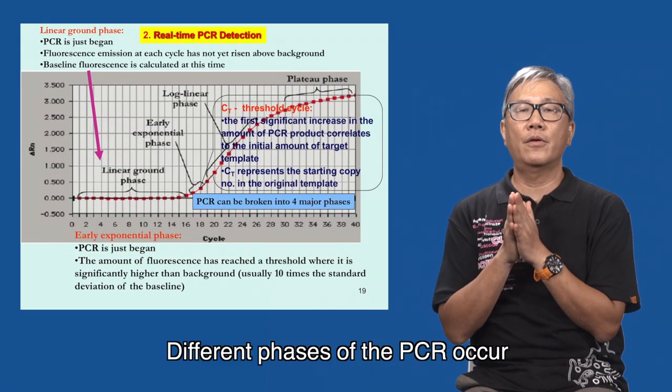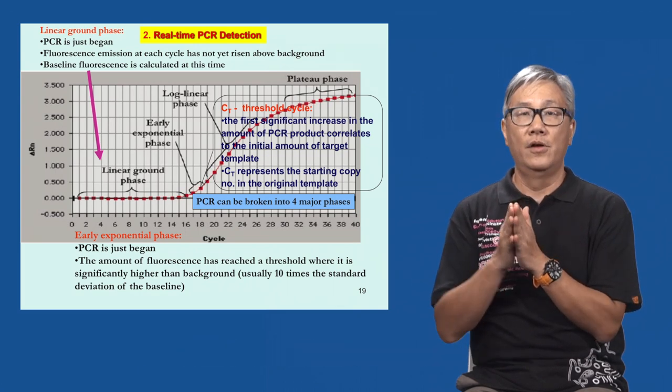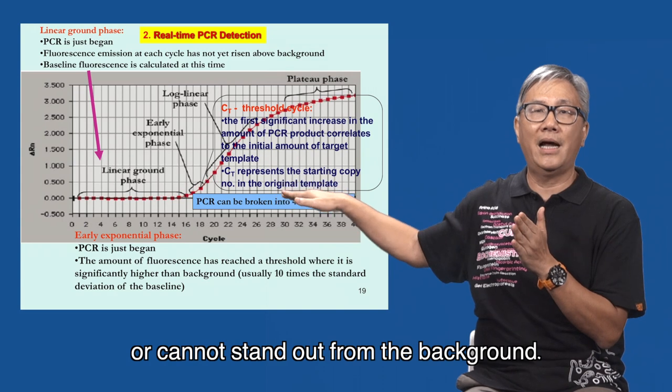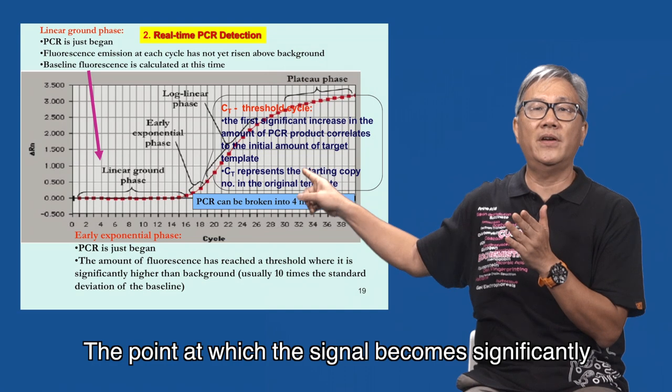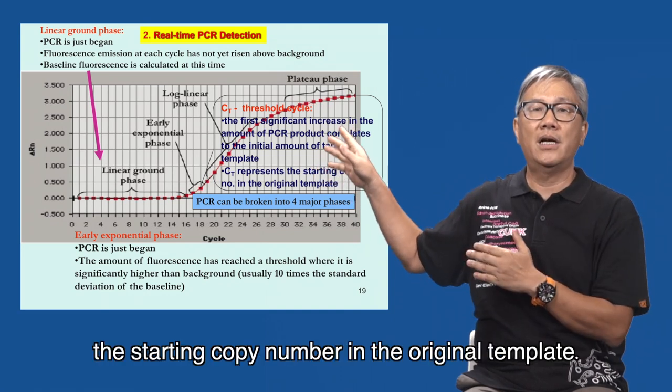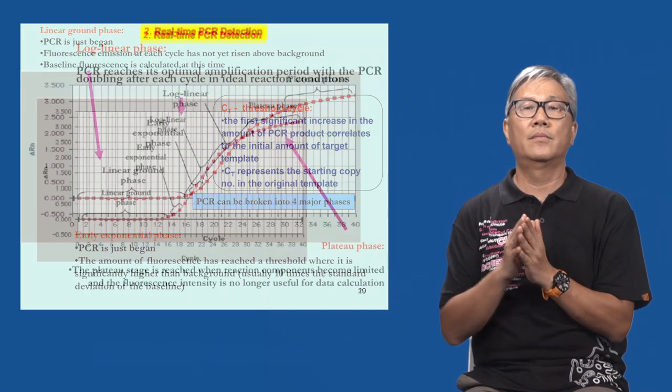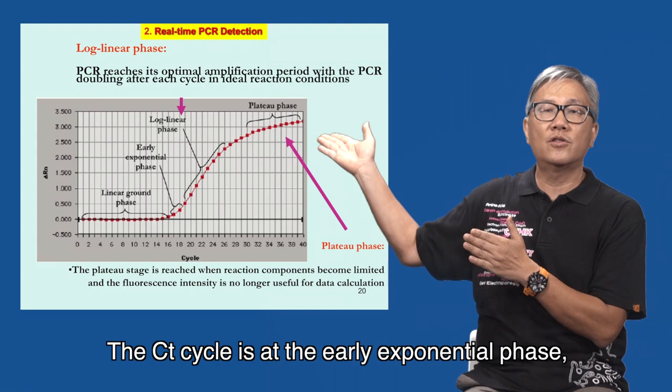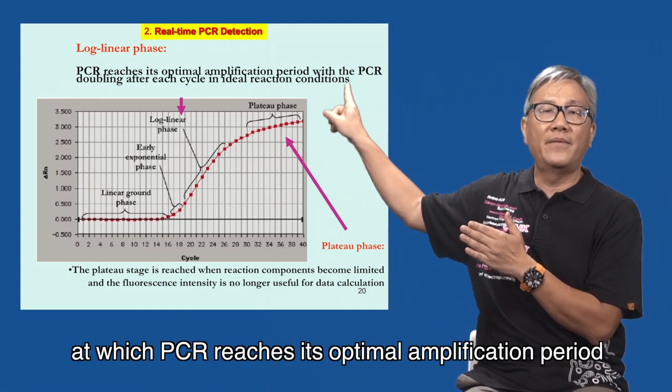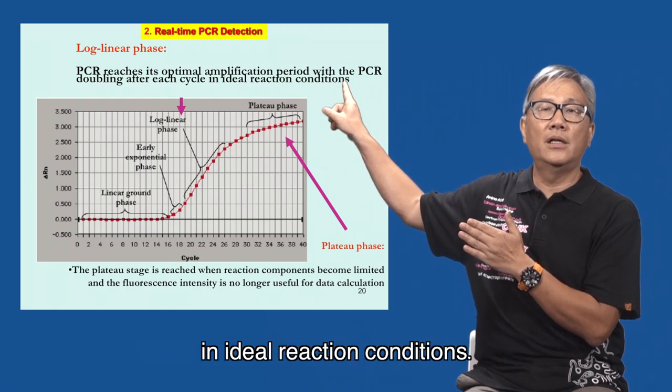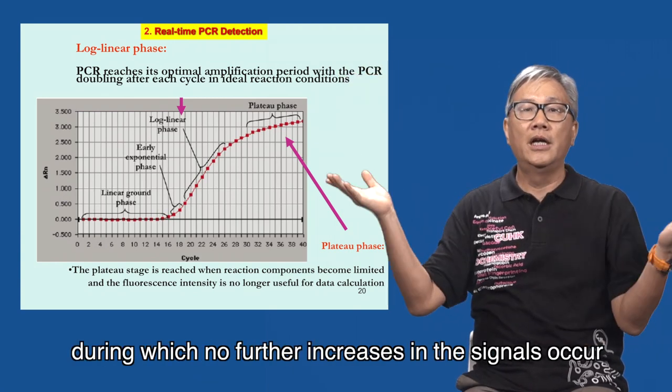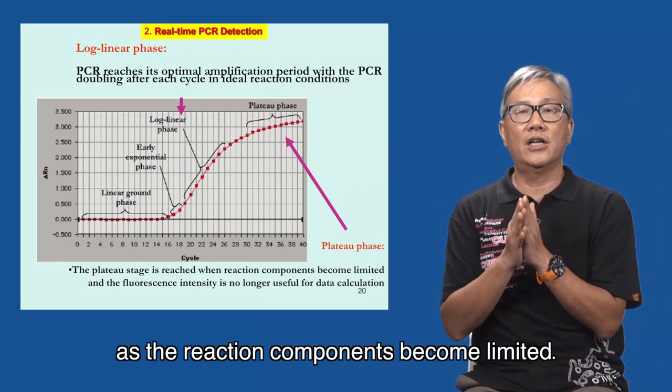Different phases of the PCR occur over different cycles of amplification. First is the linear ground phase, when the PCR is just beginning and the signal is weak or cannot stand out from the background. The point at which the signal becomes significantly higher than the background is called the threshold. The threshold cycle, or CT, represents the starting copy number in the original template. The CT cycle is at the early exponential phase, whereas phase III is the log-linear phase at which PCR reaches its optimal amplification period, with the PCR doubling after each cycle in ideal reaction conditions. Finally, the plateau phase occurs, during which no further increases in the signals occur as the reaction components become limited.